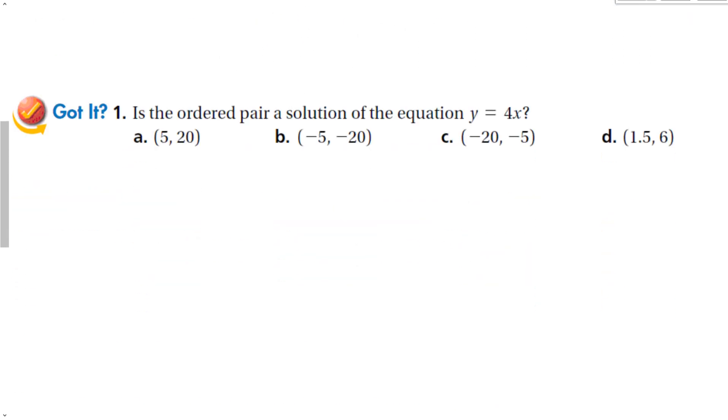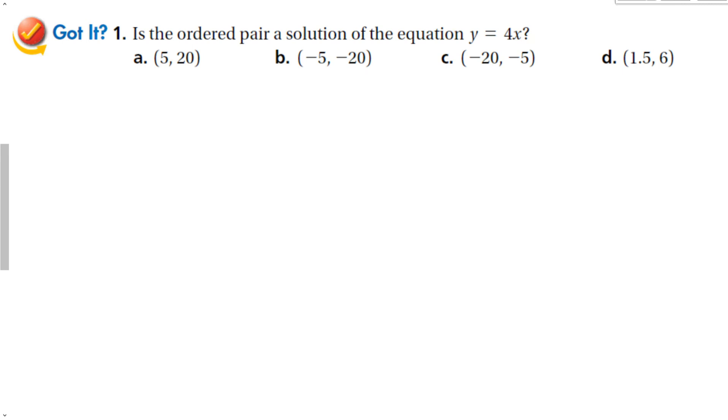Let's do some of our got it problems. Same equation: are these points solutions to the equation y equals 4x? We'll start with 20 equals 4 times 5, which is true. Then, negative 20 equals 4 times negative 5, which is also true. Be careful with this one right here, because my y coordinate is negative 5. So that's negative 5 equals 4 times negative 20, which is not true. And 6 equals 4 times 1.5, which you might not know off the top of your head, but I believe it is true.